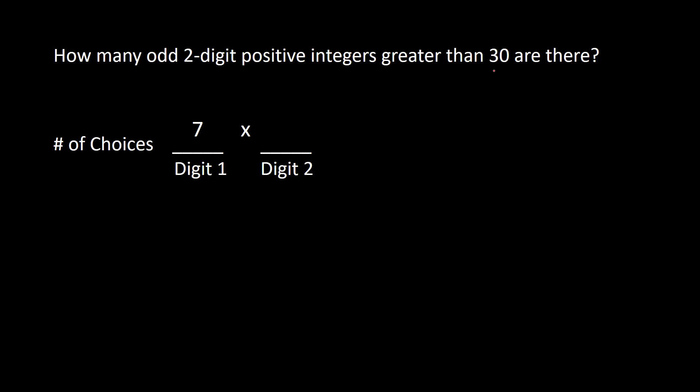For the ones place, digit 2, we have to take into account that the number needs to be odd. The last digit could be 1, 3, 5, 7, or 9, which makes the whole number odd. So the last digit has five options — all the odd digits. For each of the seven tens-place options, we have five options for the ones place. Based on the fundamental counting principle, we multiply 7 by 5 to get 35 numbers that fall within that criteria.